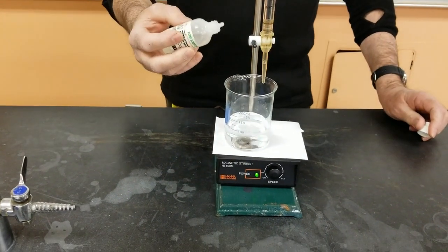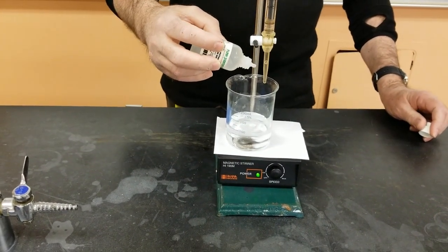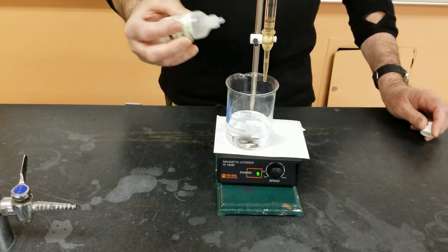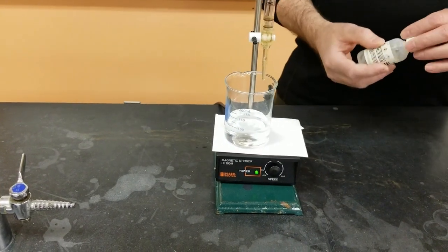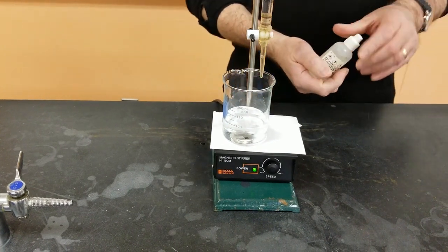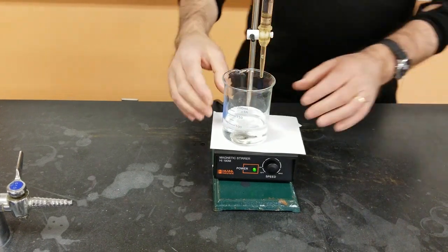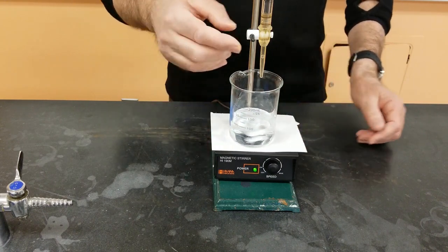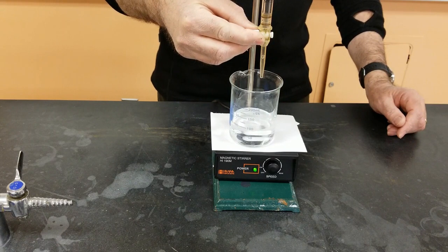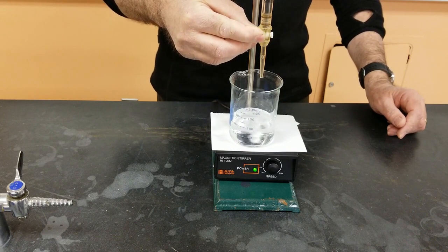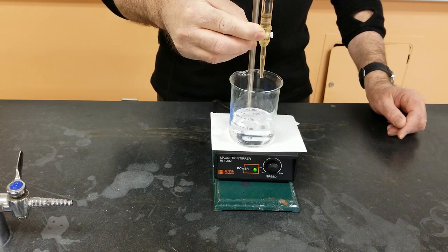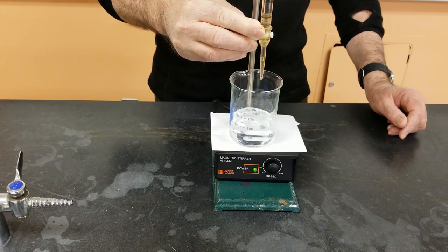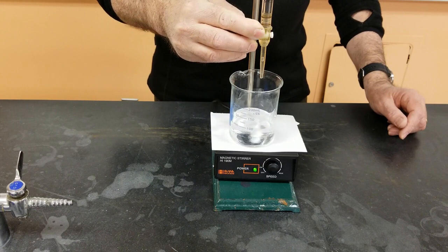So right now I'm going to add a couple of drops of phenolphthalein to the acid. And you'll see that it remains colorless because there's lots of H+ in there. Okay, so now I'm very slowly going to start adding the NaOH to the KHP and just let it drip in kind of at a steady pace.